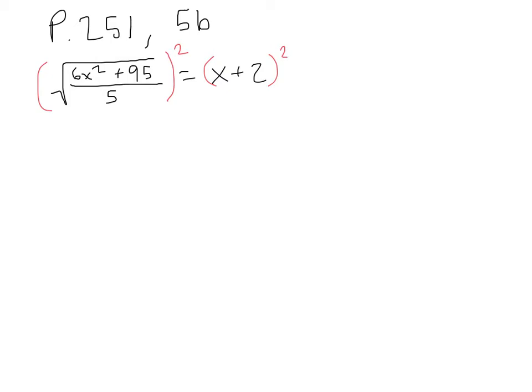After doing that, we're left with 6x squared plus 95 divided by 5 equals, well, x plus 2 squared is the same as x plus 2 times x plus 2. So foiling that out, we get x squared plus 4x plus 4.